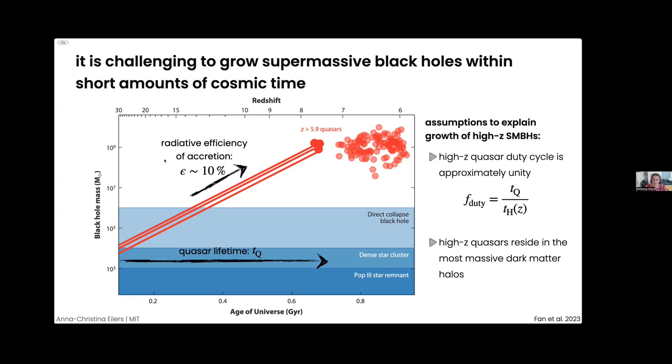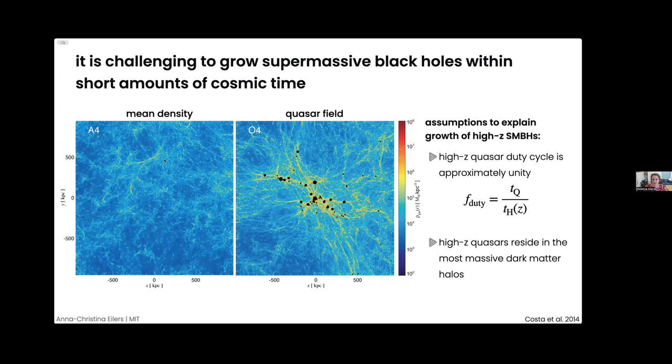An immediate consequence is that quasars are predicted to reside in the most massive dark matter halos at early cosmic times. If we had many more host dark matter halos that could potentially host massive black holes than we see quasars, the duty cycle would be less than one. From simulations like this one by Tiago Costa, we expect these massive black holes to reside in the most overdense regions in the universe, the highest density peaks of the early universe, with an abundance of smaller black holes and galaxies nearby. Ever since the discovery of the first high-redshift quasars almost two decades ago, people have been searching for this predicted abundance of galaxies to constrain the duty cycle and dark matter halo masses.